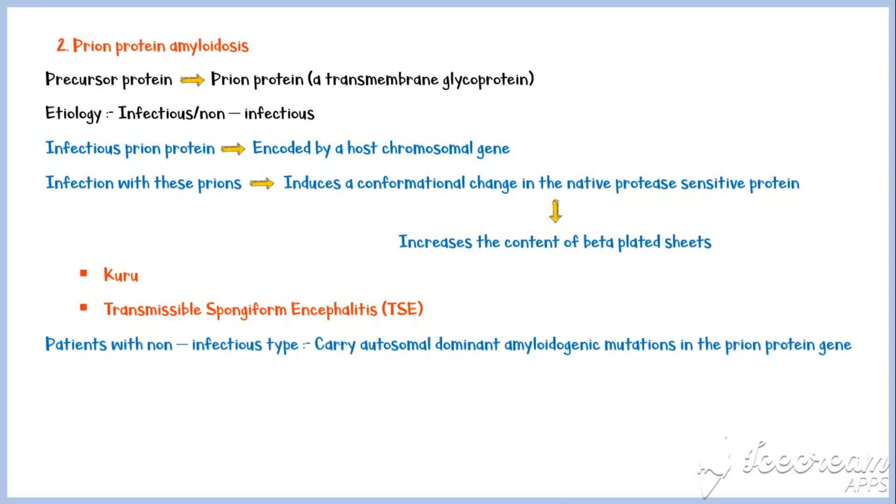Patients with non-infectious type carry autosomal-dominant amyloidogenic mutations in the prion protein gene, leading to amyloidosis, even in the absence of an infectious agent. Common examples are Creutzfeldt-Jakob disease, Gerstmann-Straussler-Scheinker syndrome, and fatal familial insomnia.